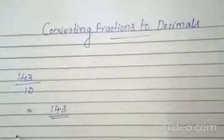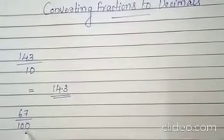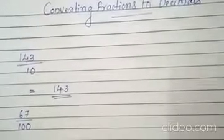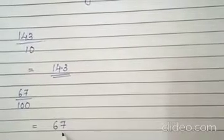I will give you another example: 67 by 100. Look at the denominator — how many zeros are there? Two zeros. First, we write the numerator. Two zeros means you have to move two places from the right of the number — one, two — then put the decimal point. There is no other number, so we put zero here. So this is the answer.